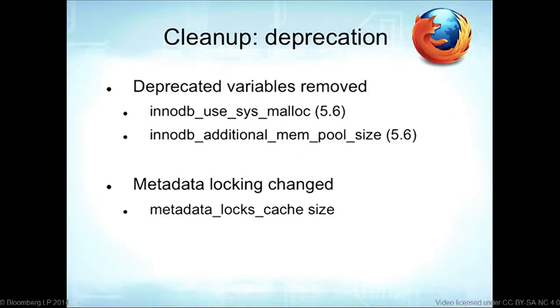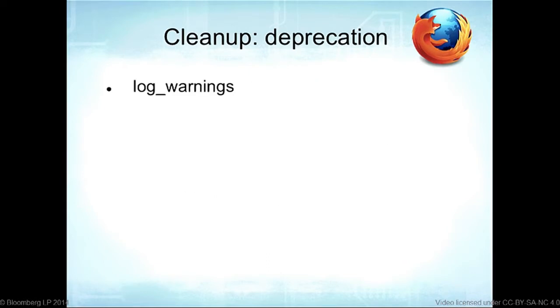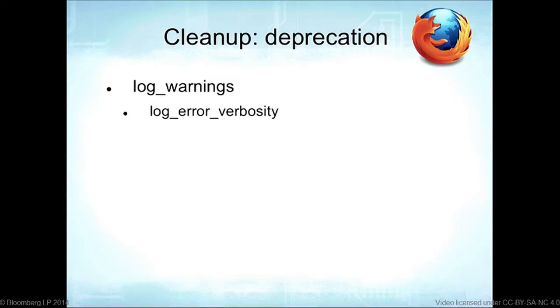Metadata locking has changed — there's now a cache size you can set, and two new variables are available for it. On log warnings: instead of using 'log_warnings', you'll now use 'log_error_verbosity', which indicates more than one verbosity level. So it's not just errors or warnings — we may actually get notice and debug levels, like the standards we're used to.